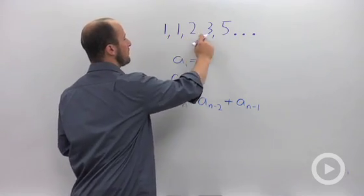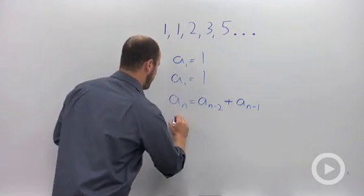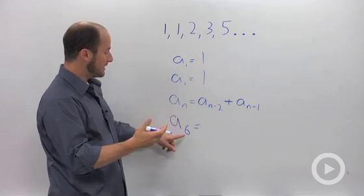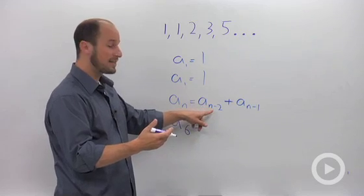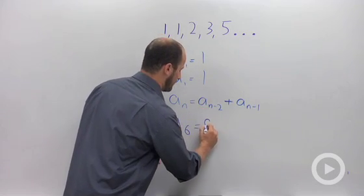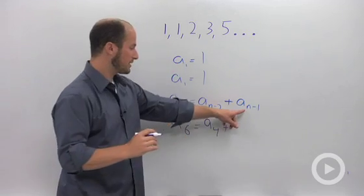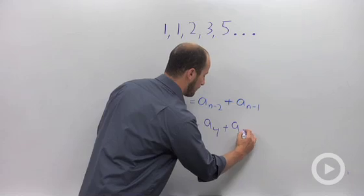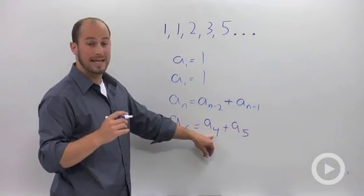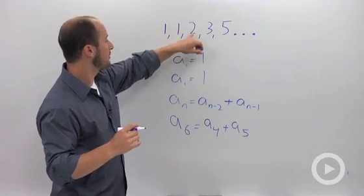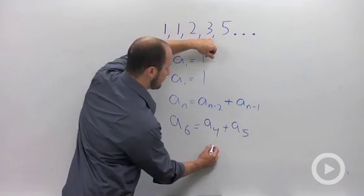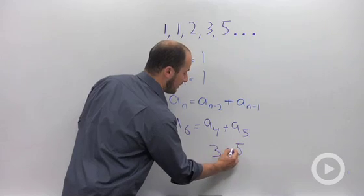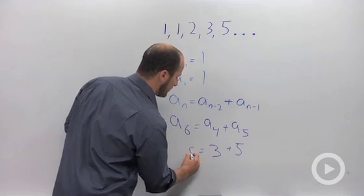So what we have is 1, 2, 3, 4, 5. Let's try to find the sixth term. a sub 6. To find the sixth term, we want to find a sub 6 minus 2, just a sub 4, plus a sub 6 minus 1, a sub 5. a sub 4 is our fourth term, so we just have 1, 2, 3, 4. a sub 5 is our next term, which is going to be 5. And so a sub 6 is just going to be equal to 8.